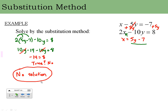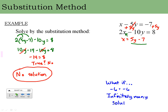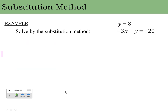I won't do a full example, but on a different problem, if we had ended up with something like negative 6 equals negative 6 — where the variables canceled and both sides are equal — that would mean infinitely many solutions. So if variables cancel and you get a true statement like something equaling itself, the answer is infinitely many solutions. Those are the special cases for substitution.